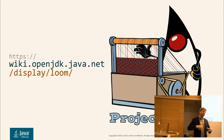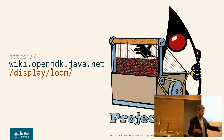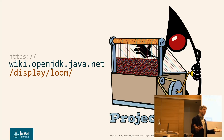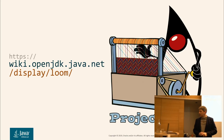Project Loom was first discussed at JVMLS around August 2017. The process is that you go around inside Oracle to find people who want to work on it. The very first person at JVMLS who wanted to join the project was Alan Bateman, so he's co-leading it with me. He's doing most of the API design and library work.